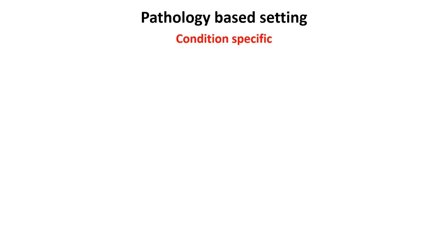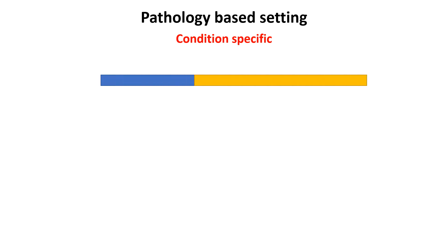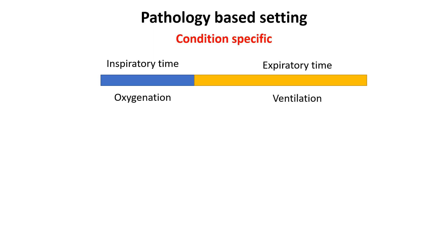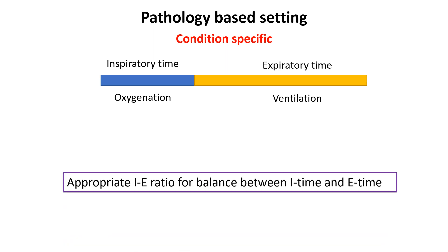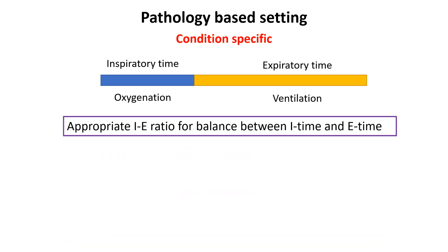Taking appropriate inspiratory time, expiratory time, and IE ratio requires adjustment based on the patient's specific respiratory conditions. Longer inspiratory time allows for more complete filling of the lungs, enhancing oxygenation, while adequate expiratory time ensures complete exhalation, facilitating the removal of carbon dioxide. The IE ratio is strongly influenced by inspiratory time but must be adjusted to ensure adequate expiratory time.